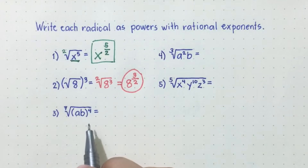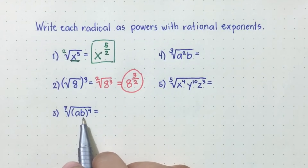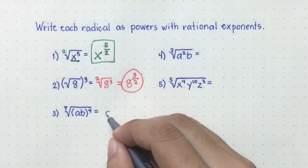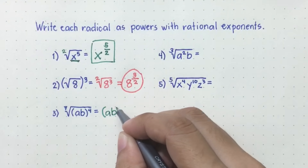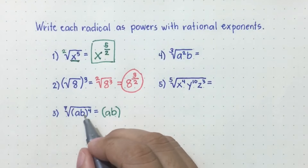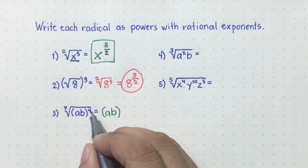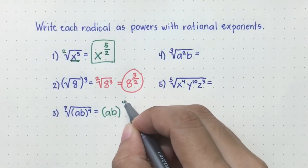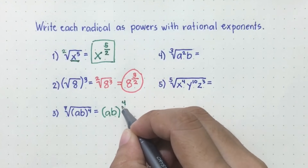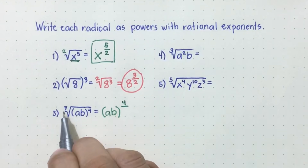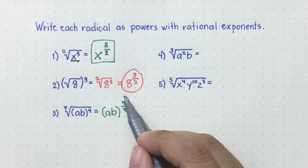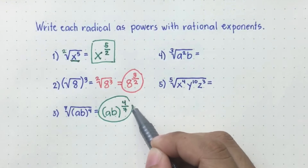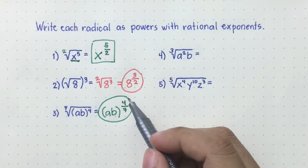Another one. Here the radicand is ab raised to four. ab will be the base — close it with parentheses because they are together — then raised to four, meaning that will be the numerator of the rational exponent. And the index seven will be the denominator. So we get (ab) raised to four over seven.